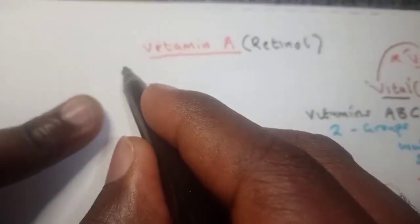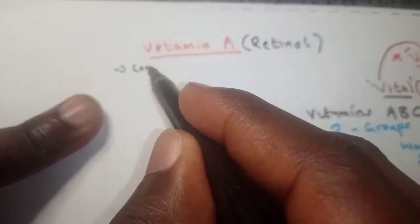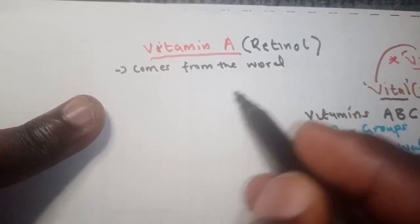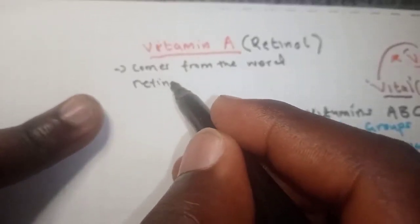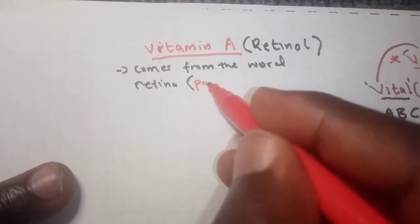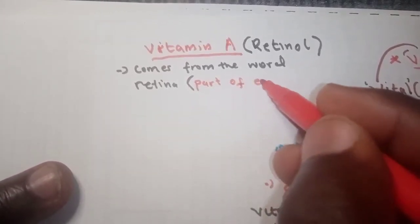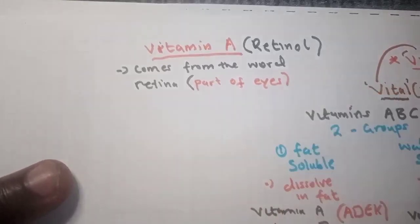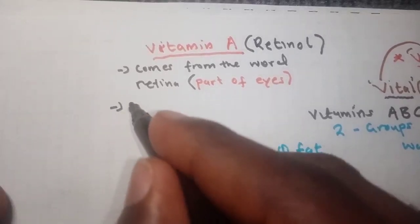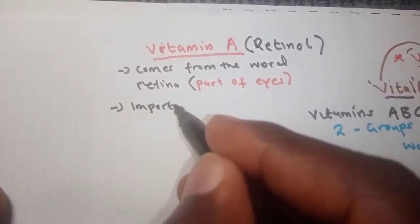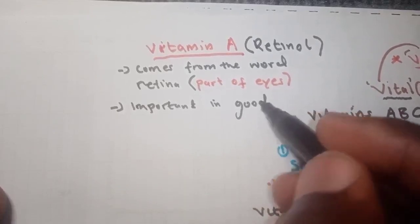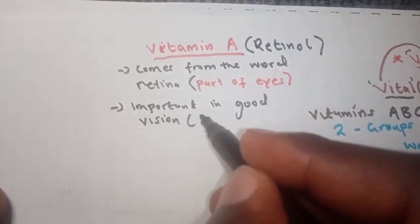The name 'retinol' comes from the word 'retina', which is a part of the eye that helps in refracting light. So vitamin A is important for good vision — vision simply means seeing.